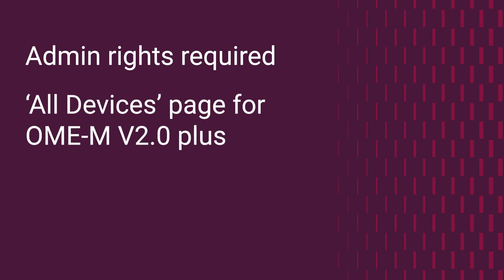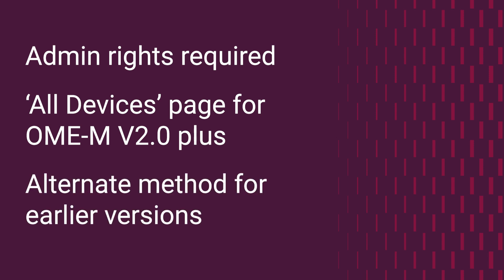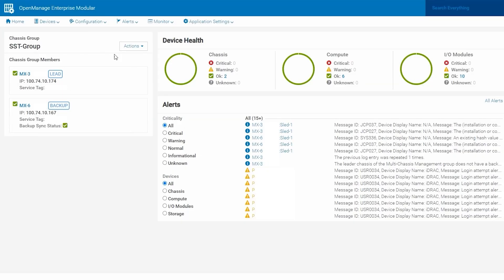If you are on OpenManage Enterprise Modular version 2.0 and above, we can accomplish this from the All Devices page. If you are below this version, then we will need to accomplish this via a different method, which we will also cover in this video. First we will look at the method of pulling chassis logs if you are on OpenManage Enterprise Modular version 2.0 or above.